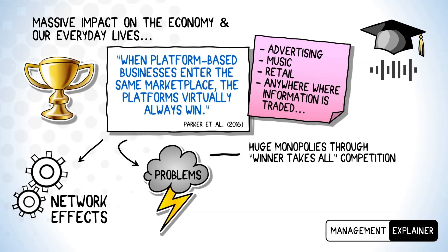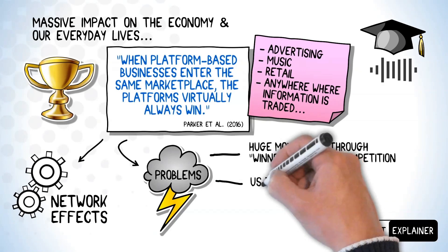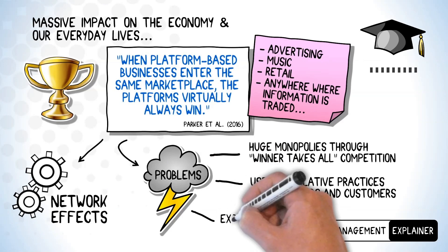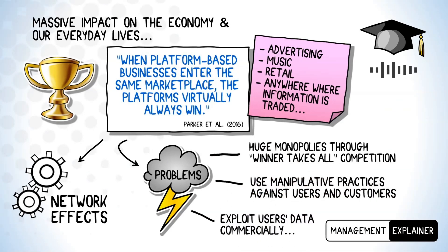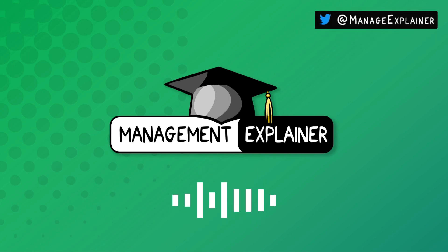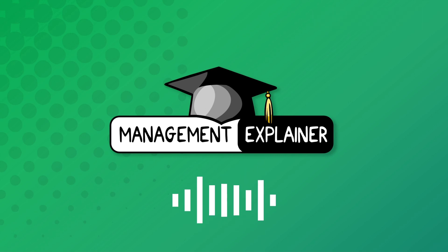But it's also important to realise that platforms are responsible for a number of big problems. One such problem is that platforms have a tendency to result in huge monopolies emerging from what is known as winner-takes-all competition. Just look at Amazon or Google, for example. In the long run, this will stifle competition and will funnel enormous amounts of money into the owner's pockets. Another problem is that platforms routinely use manipulative practices against their users and customers, meaning that they're just not honest about how they operate. Consider the current political debate about echo chambers and social media, or the recent scandals of platforms being used to undermine democratic processes. A third problem is that platforms often exploit their users' data commercially and without permission, for example by selling it to other parties. This can be very lucrative, but obviously isn't the right thing to do.